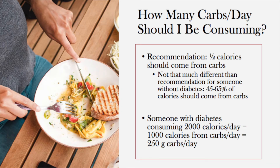You now know it is safe to consume carbs if you have diabetes, but how do you know the amount you should be consuming each day? It is recommended for someone with diabetes that half their calories come from carbohydrates. This is not much different from the recommendation for someone without diabetes, which is 45–65% of calories from carbs. For example, if you consume a 2,000-calorie diet, you should be consuming half of those calories — or 1,000 calories a day — from carbs.